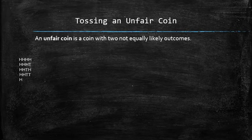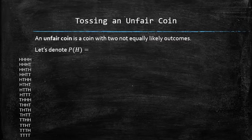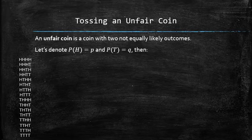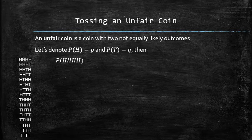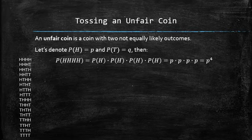Let's consider the sample space of tossing a coin four times, and let's denote the probability of heads as p and the probability of tails as q. Since the outcomes are not equally likely, let's find the probabilities of each of the simple outcomes. Since the outcomes of different tosses are independent, the probability of four heads can be found using the special multiplication rule and is equal to p to the power of 4.